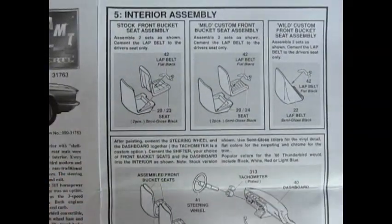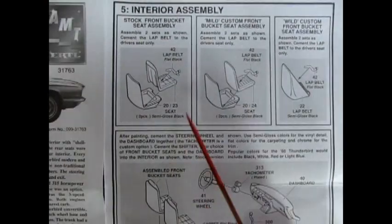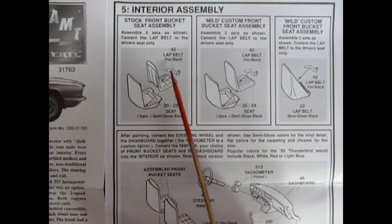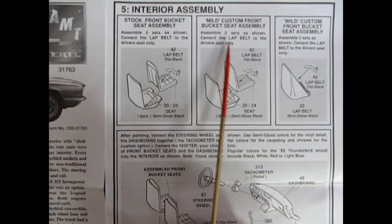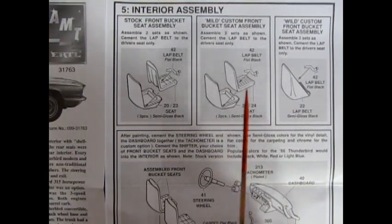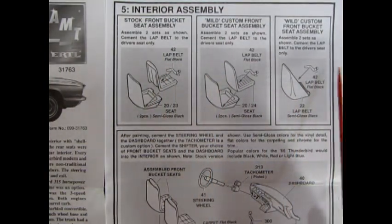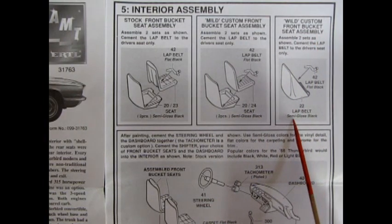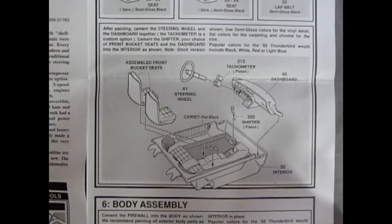Okay then we get into our interior assembly. And here we have the back of the bucket seat and the front, gluing together with the lap belt. That's pretty much consistent for your mild and wild. Oh your stock and your mild custom. And then here we have the wild custom front bucket seat, which is a different type of bucket seat with the lap belt going in here.